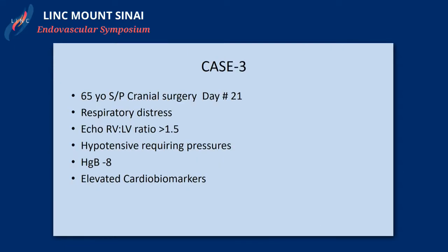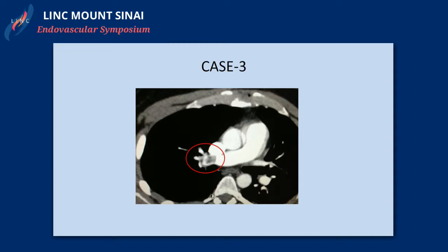The third case is a 65-year-old patient who came in after having a three-week-prior cranial surgery and was in respiratory distress. The RV-LV ratio was greater than 1.5, and the patient continued to be hypotensive despite two to three pressors. Hemoglobin was low with elevated cardiac biomarkers. We had challenges with the use of thrombolytics or IV heparin, and the CT scan showed a very large thrombus. Despite conservative therapy, the patient's pressors could not be weaned, and we couldn't reach consensus among specialists about what type of lytics could be used.